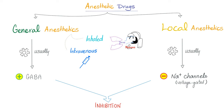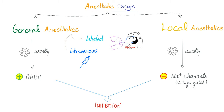General anesthetics can be inhaled or intravenous. Inhaled — you breathe it in. Intravenous — it goes into your veins. Don't forget to add neuromuscular blockers to the general anesthetic. The general anesthetic knocks you out and makes you unconscious; the neuromuscular blocker paralyzes you, which makes it easier to intubate. For abdominal surgery, you do not want muscles twitching and contracting whenever you touch them.